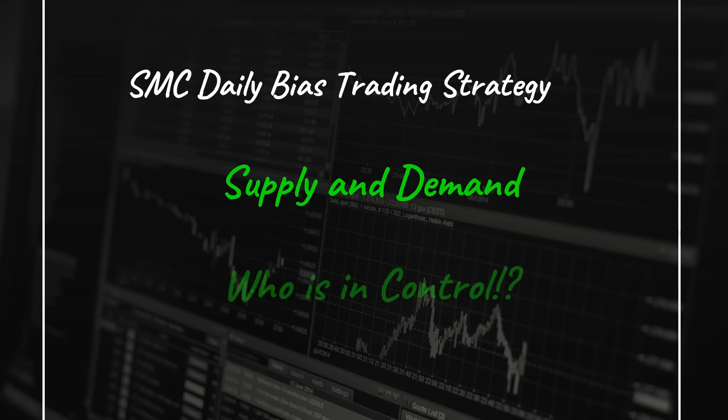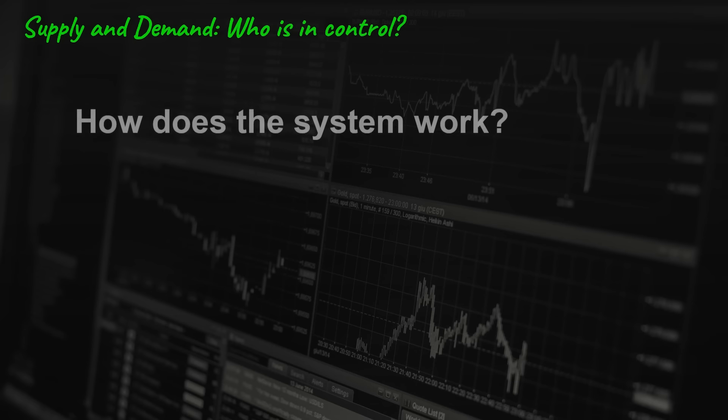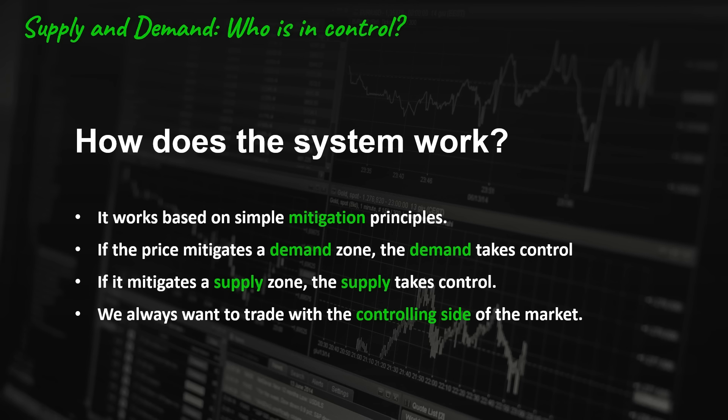Supply and demand — who is in control? Identifying which side is in control is really important in trading, because it can help you avoid many unnecessary losses. The system works based on simple mitigation principles: if the price mitigates a demand zone, the demand takes control; and if it mitigates a supply zone, the supply takes control. We always want to trade with the controlling side of the market.